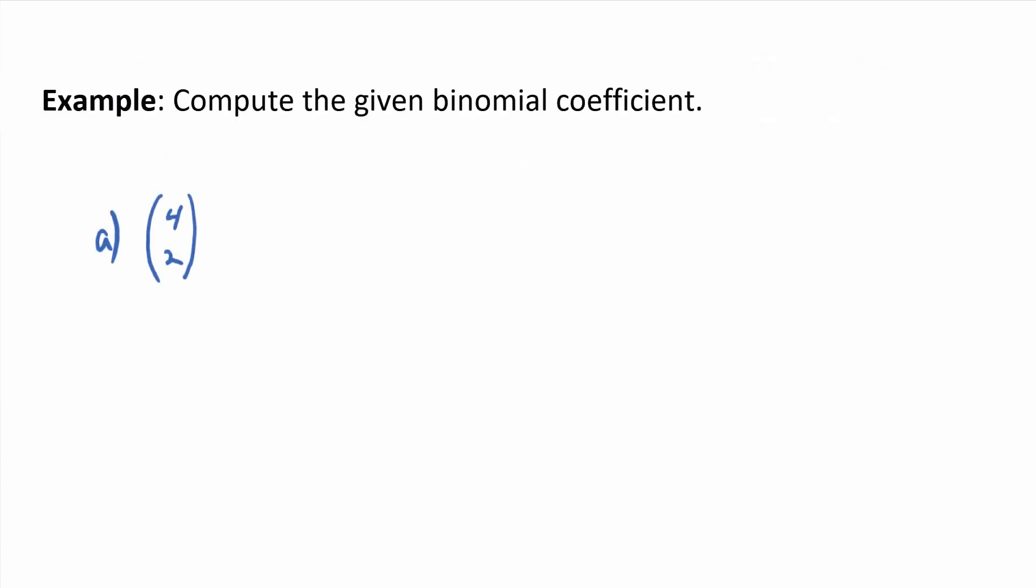So without using a calculator or a formula that you might have learned in another class, compute 4 choose 2. Well, I mean, we already did it, but let's do it again. What's the worst that we have to do? Five total rows of Pascal's triangle, right?